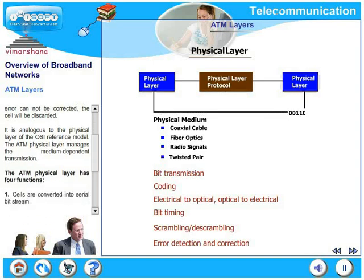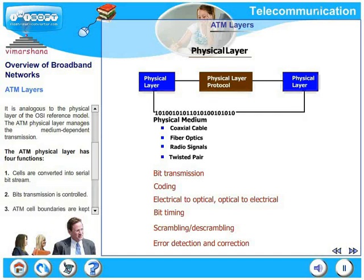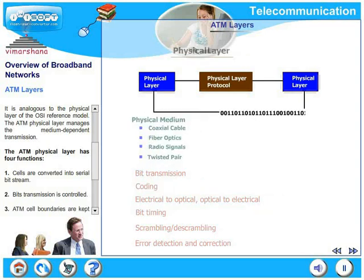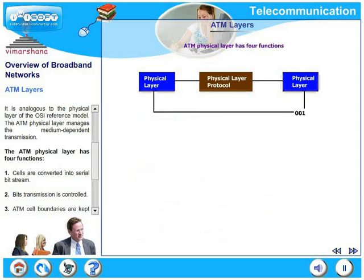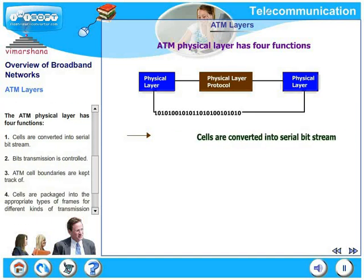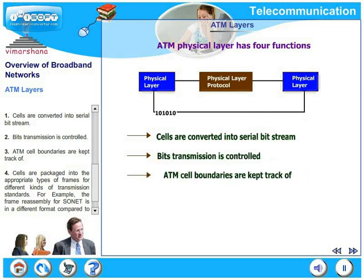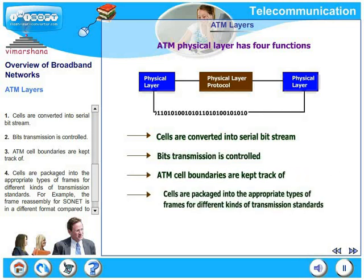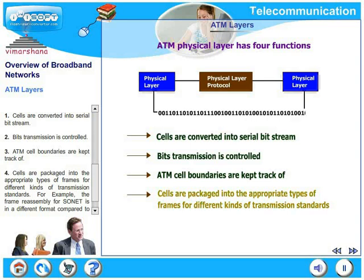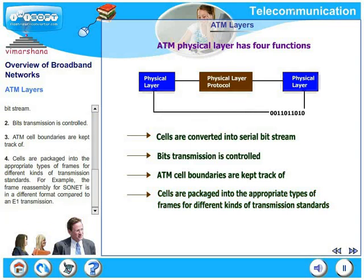It is analogous to the physical layer of the OSI reference model. For example, the ATM physical layer manages the medium dependent transmission. The ATM physical layer has four functions: cells are converted into a serial bit stream; bits transmission is controlled; ATM cell boundaries are kept track of; and cells are packaged into appropriate types of frames for different kinds of transmission standards — for example, frame reassembly for SONET is in a different format compared to an Ethernet transmission.